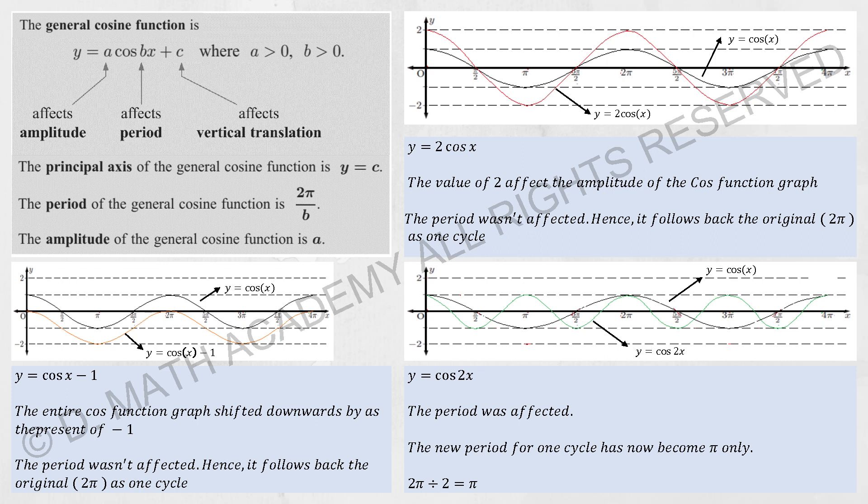And for cosine 2x, it will now squeeze the thing again. One cycle will be ended at pi. You can zoom in, screenshot this down and have a good look of it.